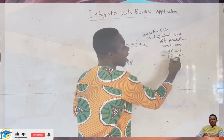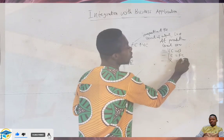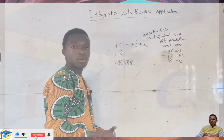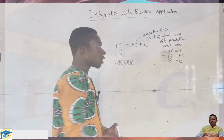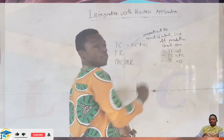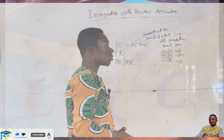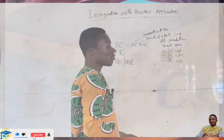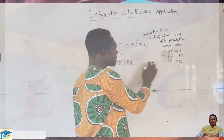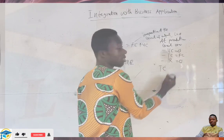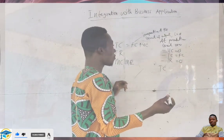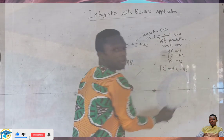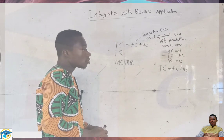And three, our total revenue should be equal to zero. At the production level of zero, variable cost is zero and total cost equals fixed cost. We have established that total cost equals fixed cost plus variable cost, so if variable cost is zero, total cost amounts to fixed cost.